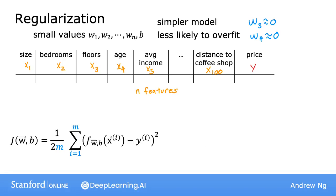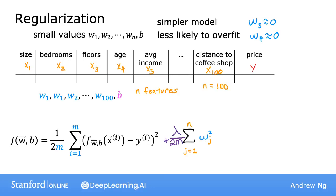For example, if you have data with 100 features for each house, it may be hard to pick in advance which features to include or exclude. So let's build a model that uses all 100 features, giving you parameters w1 through w100, as well as the 101st parameter b. Since we don't know which parameters will be important, let's penalize all of them by adding lambda times the sum from j equals 1 through n — where n is 100 — of wj squared.